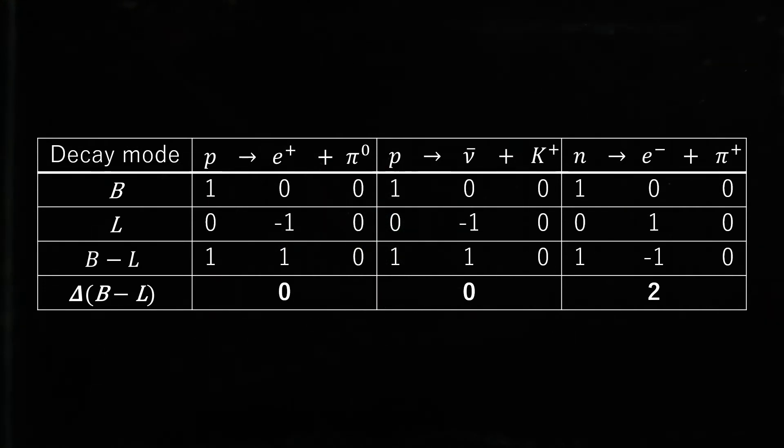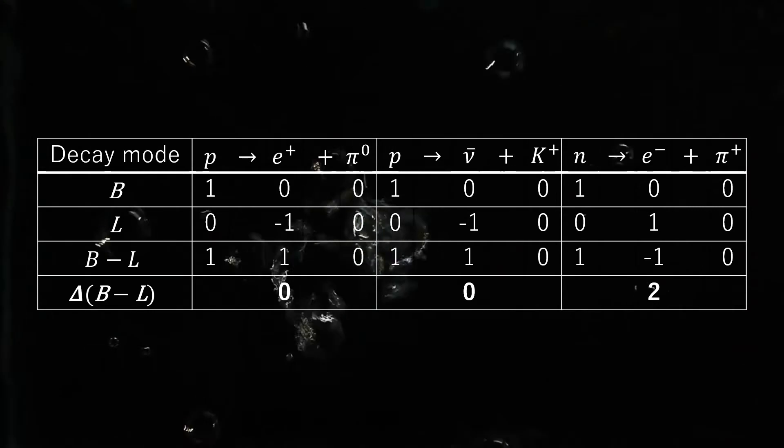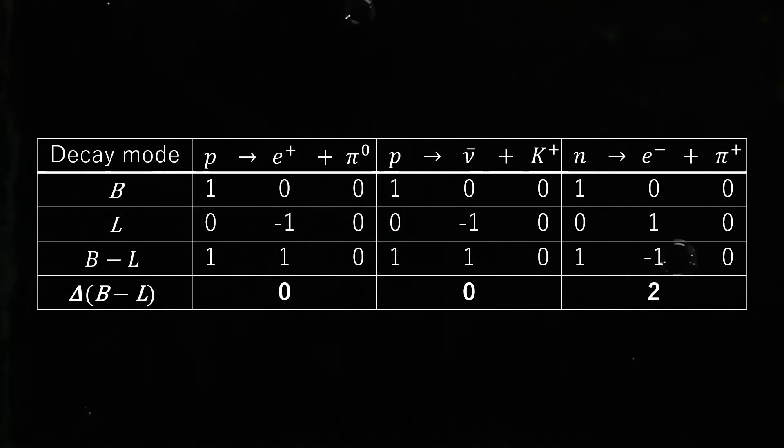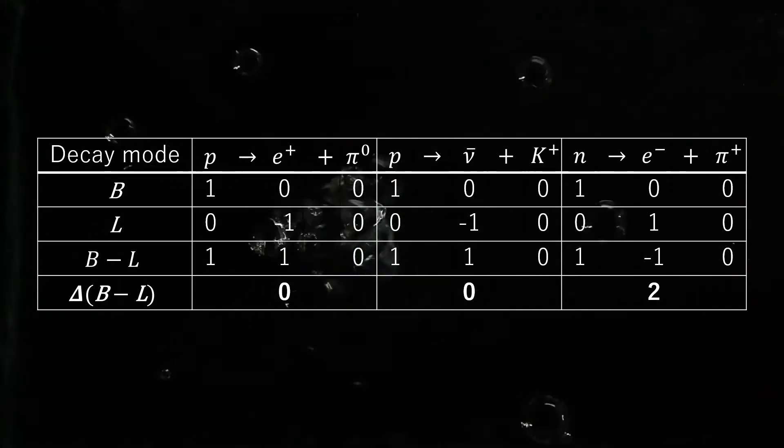Quarks and leptons are indistinguishable in any 4D GUT, and both the baryon and lepton number are not conserved. This leads to baryon number violating nucleon decay.